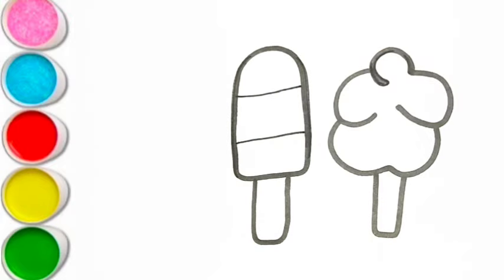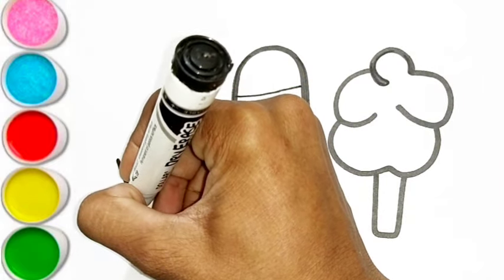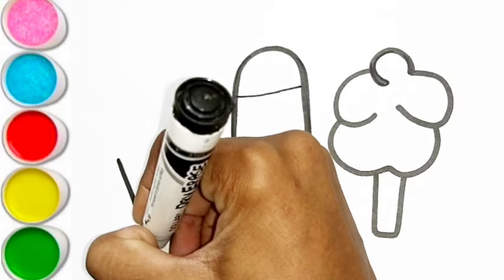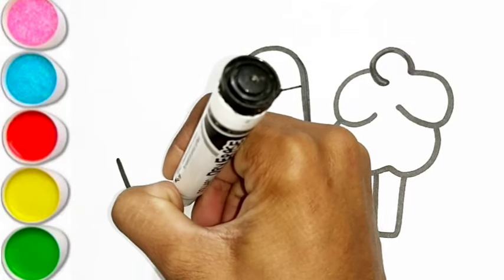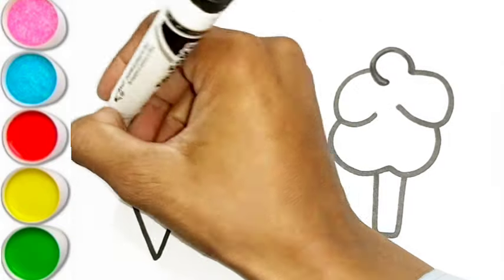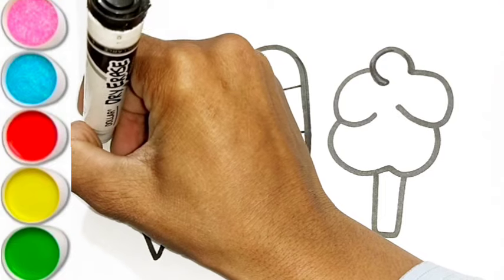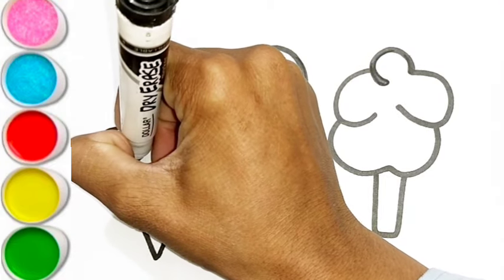S is for sun. S, s, sun. T is for toad. T, t, toad. U is for umbrella. U, u, umbrella.